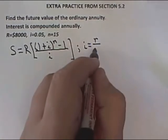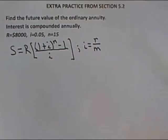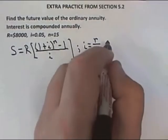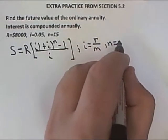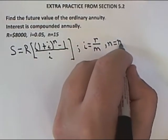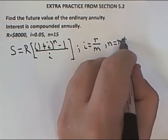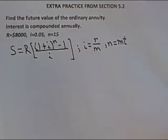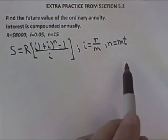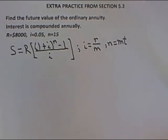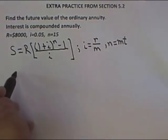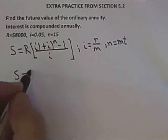Also, you may need to calculate n based on knowing that it is m times t, where m is the number of compounding periods per year and t is the number of years representing the life of the annuity. Like I said, you don't need those here, but you do in general.